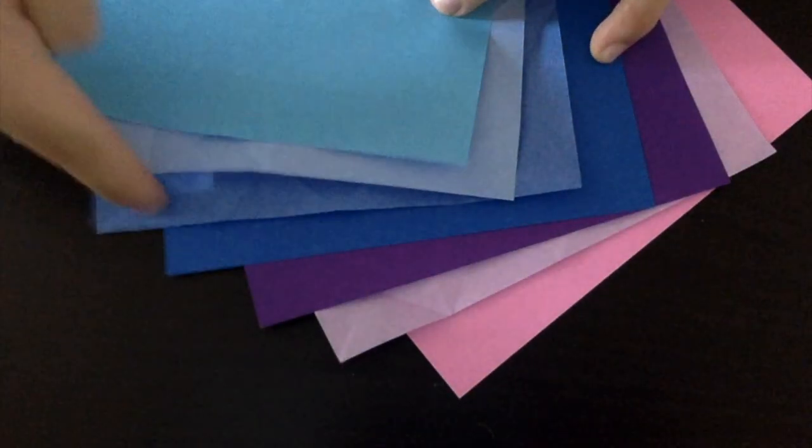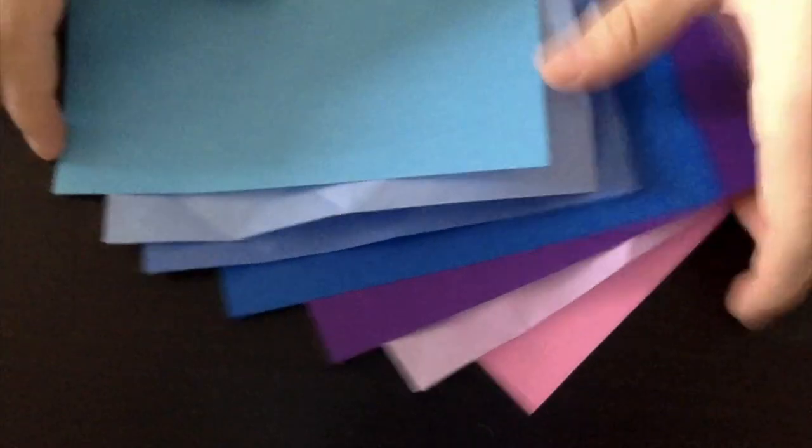So today we're going to need seven sheets of square origami paper and the first thing you're going to do is fold the sheet into a triangle.